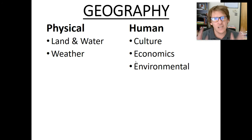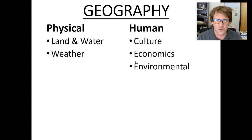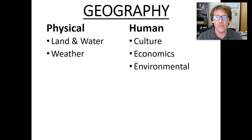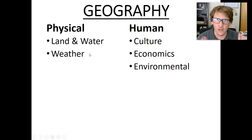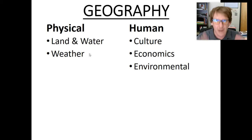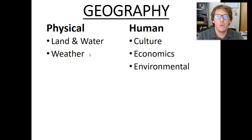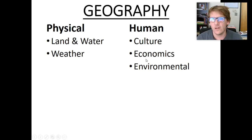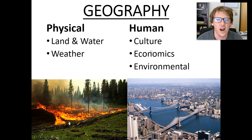Environmental — this is kind of confusing. The environment itself is physical: weather, climate, animals, plants, nature, mountains, valleys, deserts — that is physical. But how we interact with the environment is going to be human. If we're talking about humans interacting with the physical, then we lean that towards human geography.